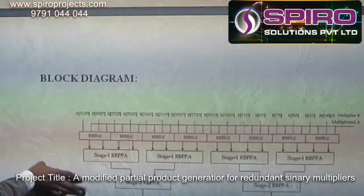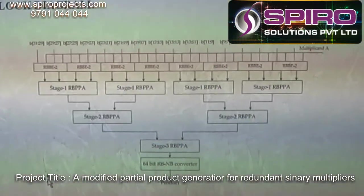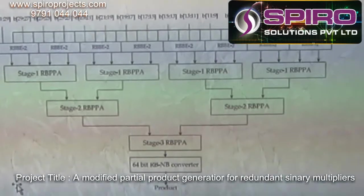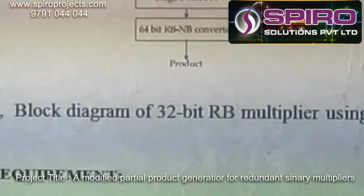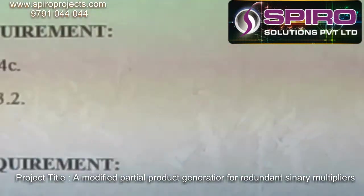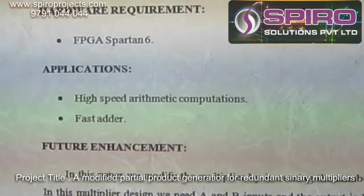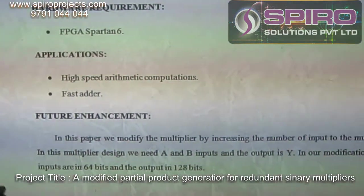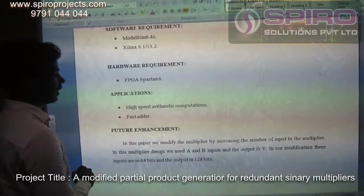This is the block diagram for the existing system for Booth encoding. Our proposed system was used in quantification for 64-bit and 128-bit multipliers.